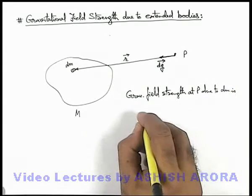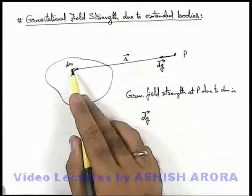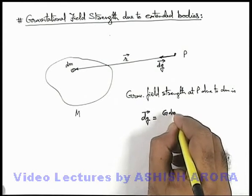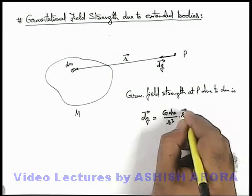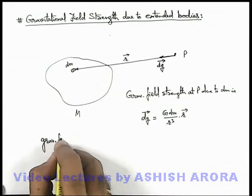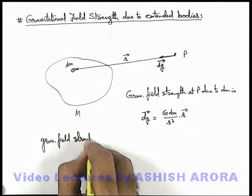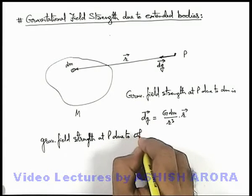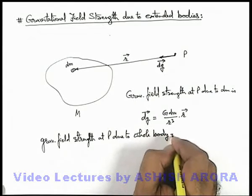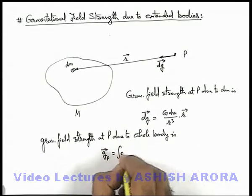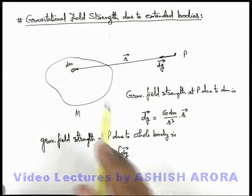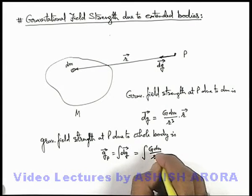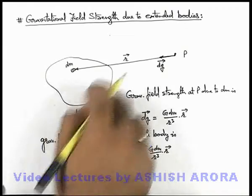So in this situation we can write: gravitational field strength at P due to dm is dG vector, and as dG vector is along the direction of the position vector of this elemental mass dm, this can be written as G·dm divided by r cubed into r vector. And if we wish to find out the gravitational field strength at P due to the whole body, this can be given as G at point P vector equals the integration of dG vector, which is the integration of G·dm divided by r cubed multiplied by r vector, integrated over the whole body m.